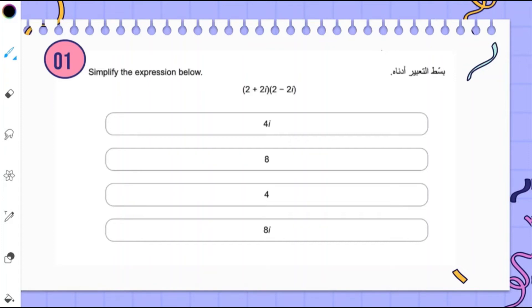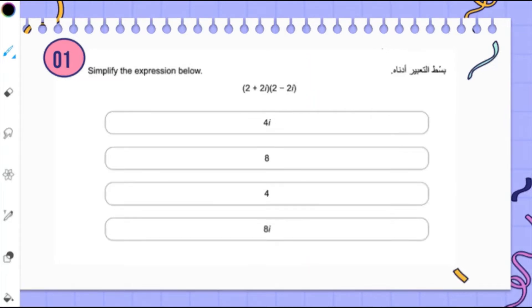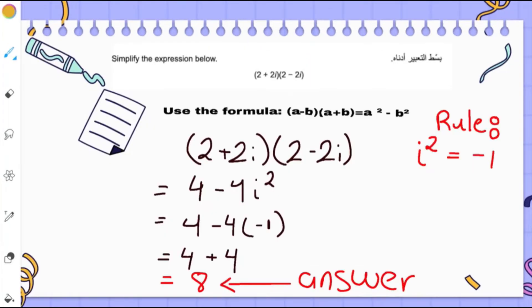So the first question says, simplify the expression below: 2 plus 2i times 2 minus 2i. i is classified as an imaginary number. So let us get into the question.